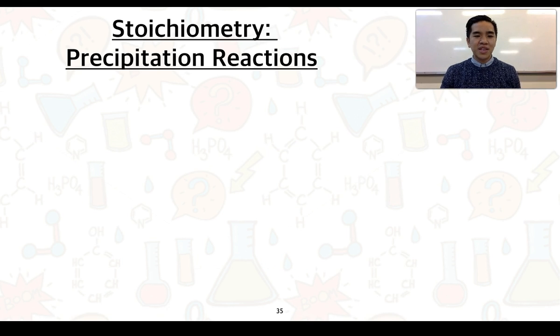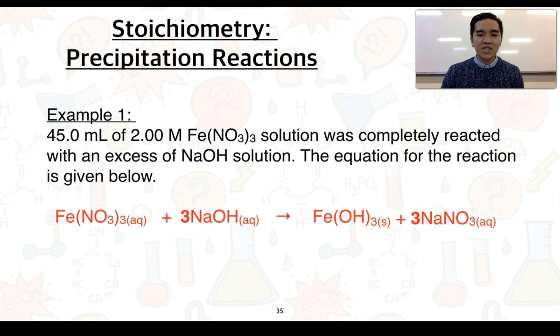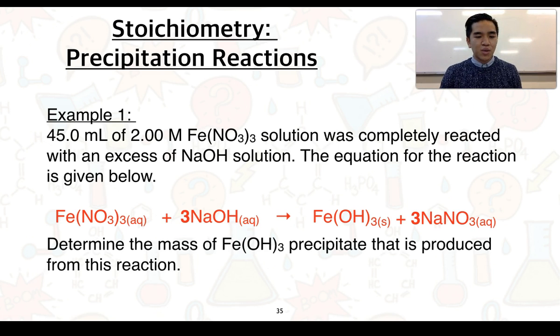We're going to look at two examples to see how we can use stoichiometry to solve for precipitation reactions. Example one: 45.0 mils of 2.00 molar iron-3 nitrate solution was completely reacted with an excess of sodium hydroxide solution. The equation for the reaction is given below. The question is asking, determine the mass of iron hydroxide precipitate that is produced from this reaction. Based on these reactants, we need to work out how much of this product is being formed.